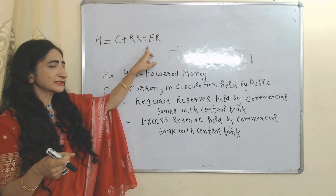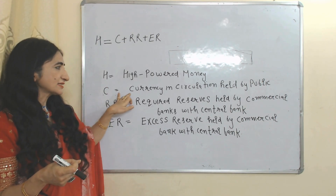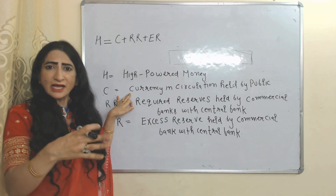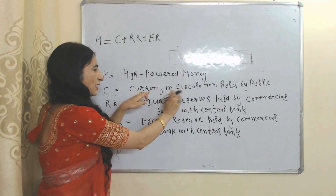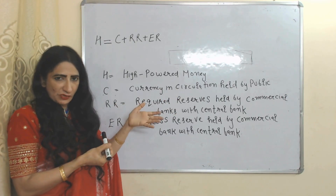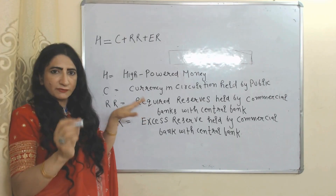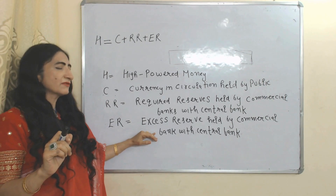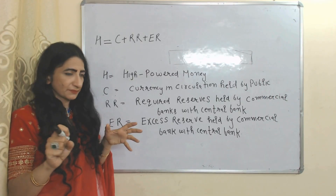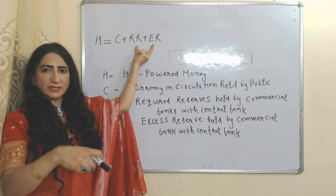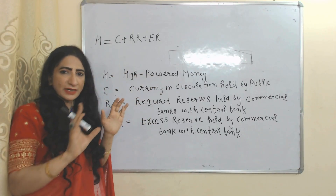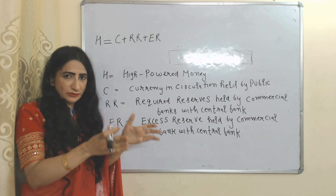The formula of high-powered money is: H = C + RR + ER. H is high-powered money. C is currency in circulation held by the public — the physical form of money like paper notes and coins — which cannot be used for credit creation. RR is required reserve held by commercial banks with the central bank, which also cannot be used for credit creation. ER is excess reserve held by commercial banks with the central bank, which can be used for credit creation.